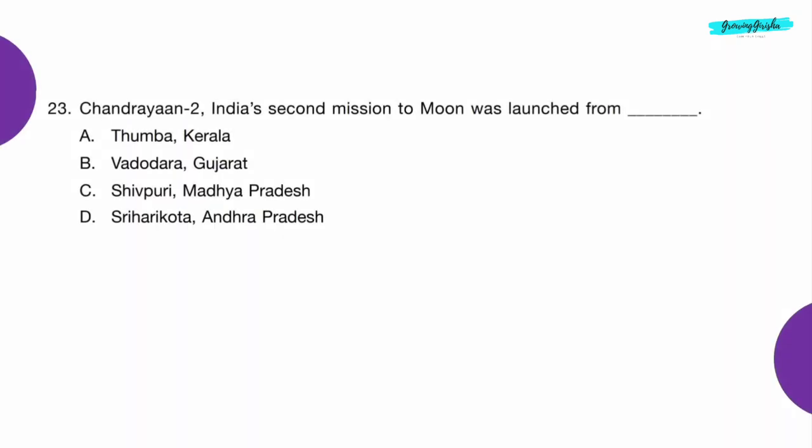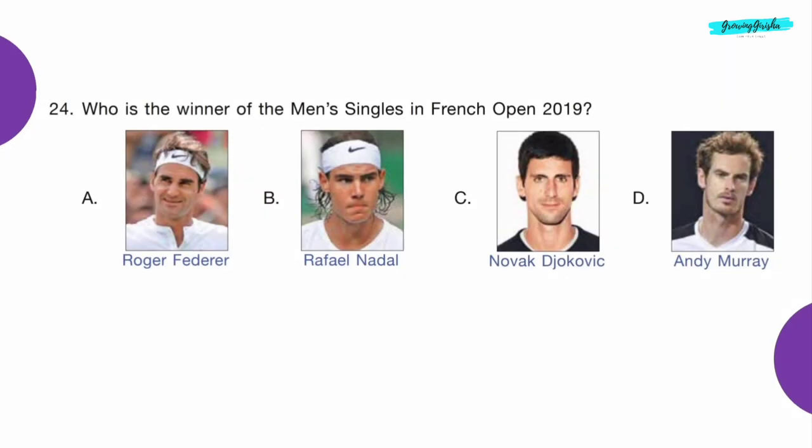Question 23: Chandrayaan 2, India's second mission to the moon, was launched from dash. Option D — Sriharikota, Andhra Pradesh.